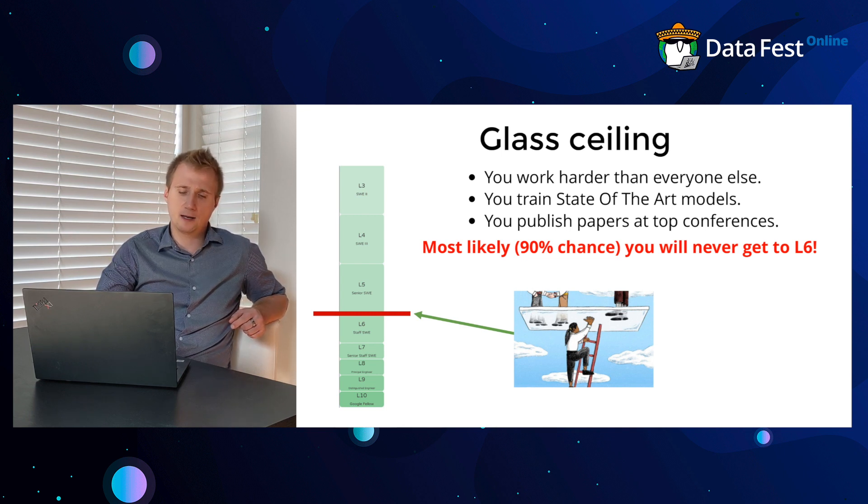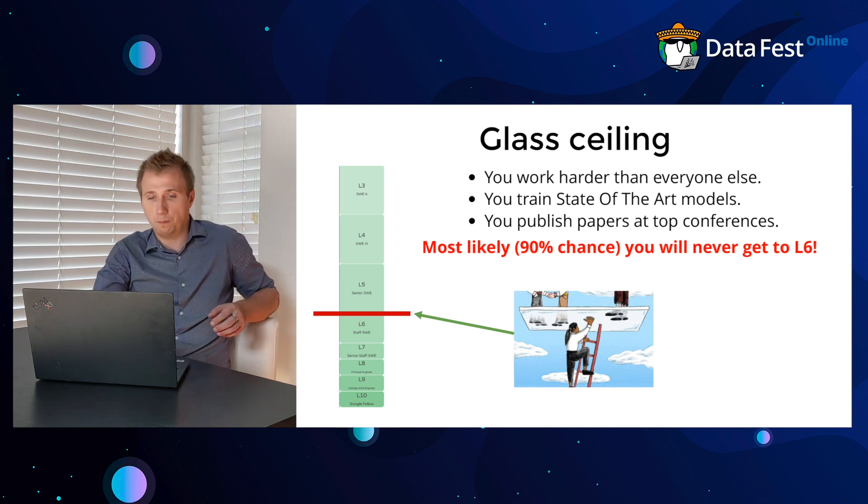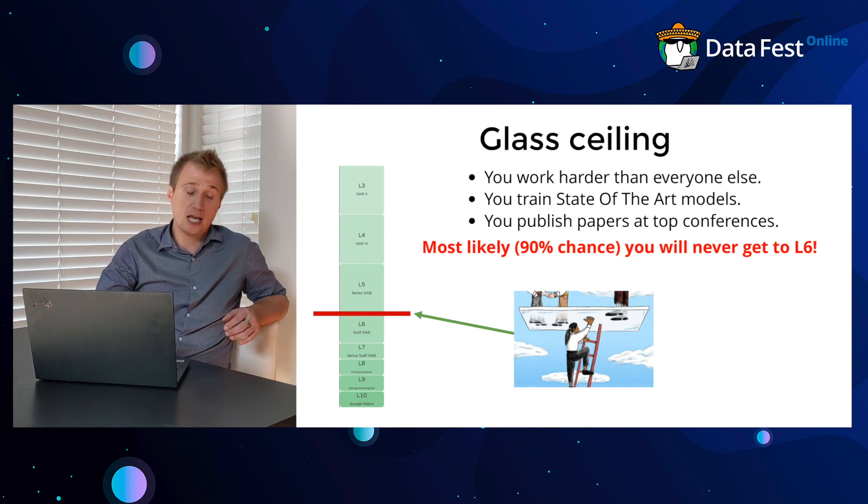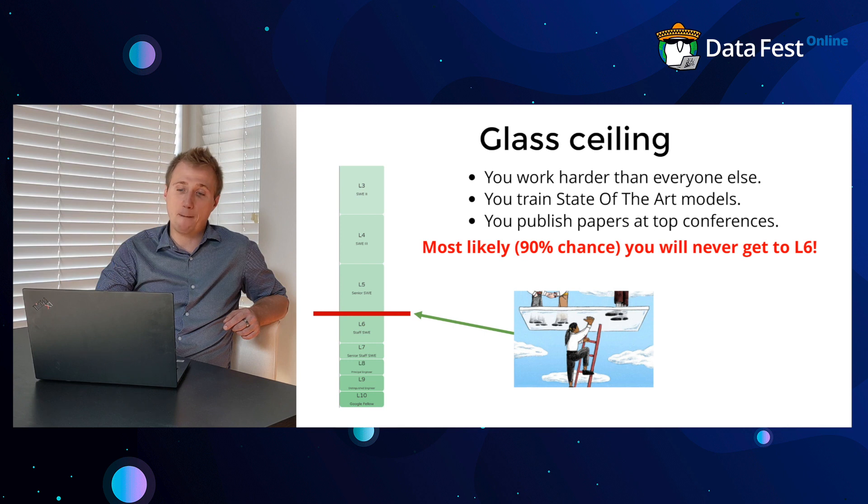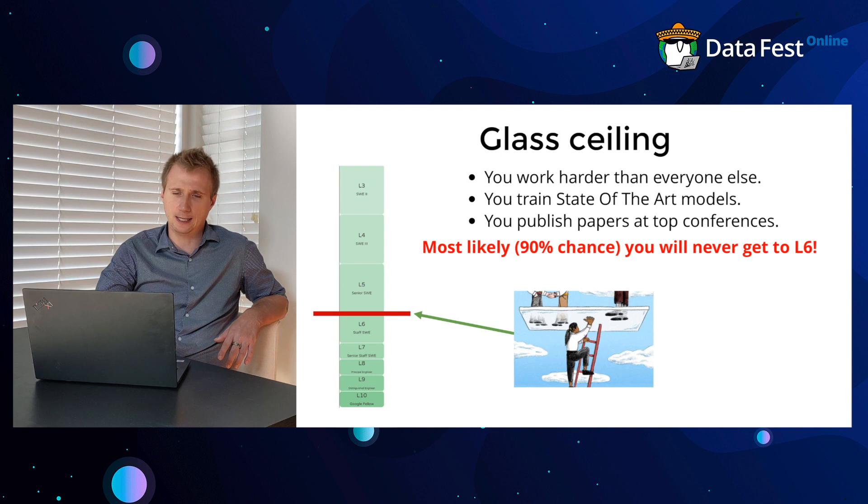But the thing is that even if you work hard and train state-of-the-art models as a machine learning engineer, or as a researcher publish papers at top conferences, most likely you will never go above level five or six. It is your glass ceiling.